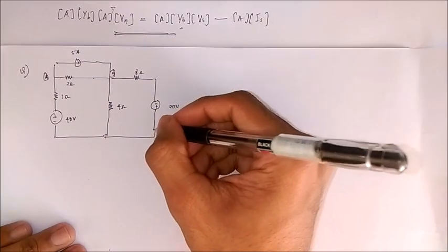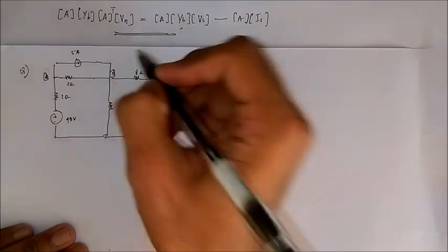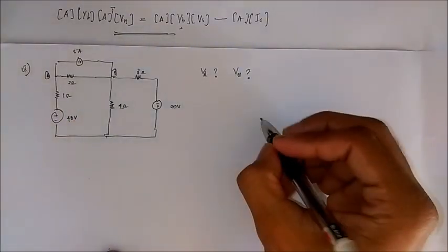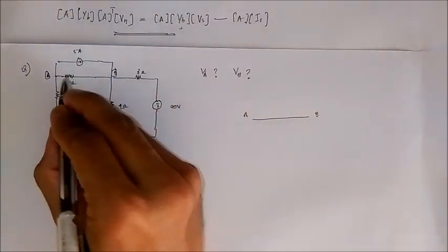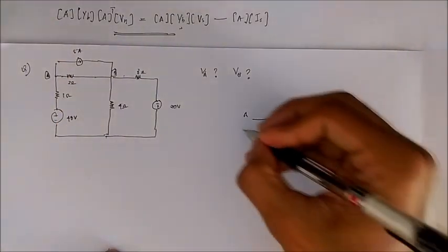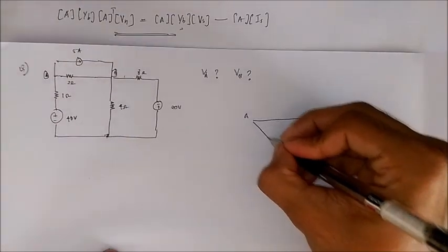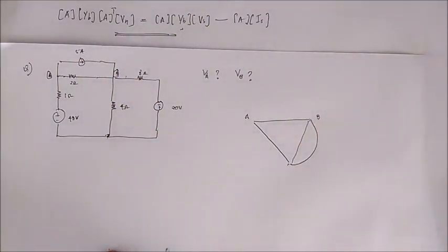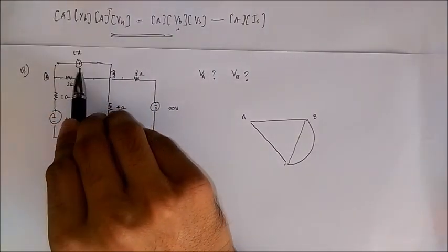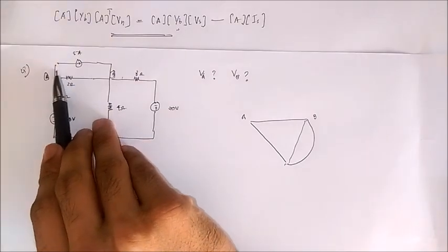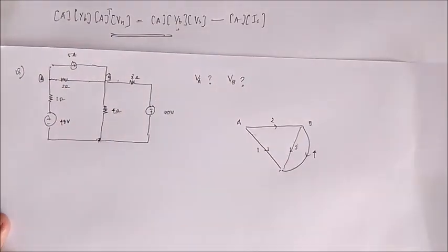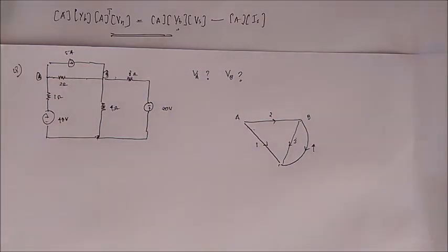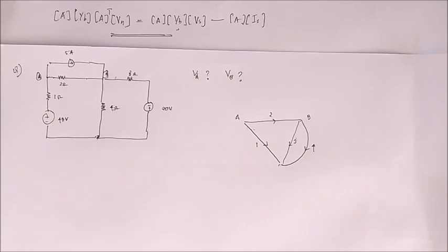Suppose we are given a circuit and need to find voltages at two points A and B — that is VA and VB. Drawing the graph of this circuit, there are two points A and B connected by a 2-ohm branch, and there is a reference node connected to A and B. The branch with only a current source is open-circuited so we do not draw it in the graph. Branch numbers and directions are assigned arbitrarily.